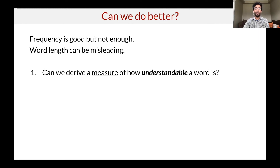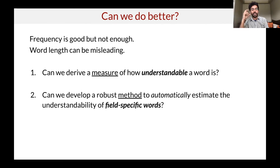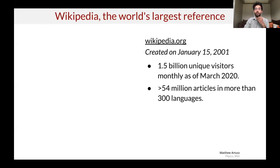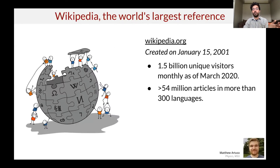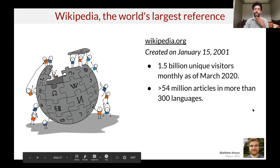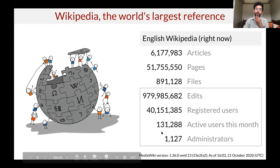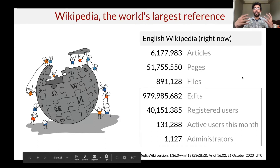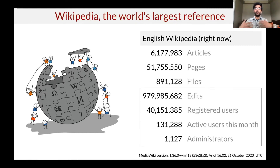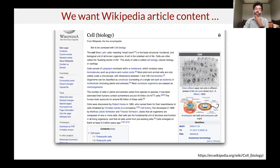We wanted to see if we could do better. Frequency is good but not enough; word length is very misleading. So we set out to create a new measure of how understandable a given word is, and also develop a method that can automatically identify words that are field-specific — for example, words in biology, physics, or chemistry that are generally more understandable than other words in that field. We decided to use Wikipedia to solve this problem. A lot of this work was done by an amazing undergraduate student, Matthew Ortuso, a physics major at MSU.